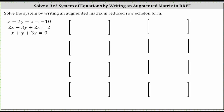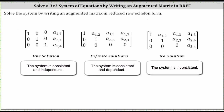We're asked to solve this system by writing an augmented matrix in reduced row echelon form. For a quick review, if the system has one solution, the augmented matrix in reduced row echelon form will have a diagonal of ones, zeros above the ones in the upper right-hand corner, and zeros below the ones in the lower left-hand corner. Again, this is when we have one solution.